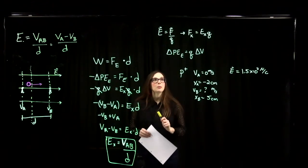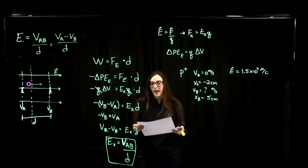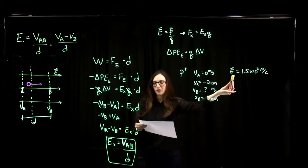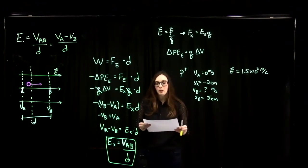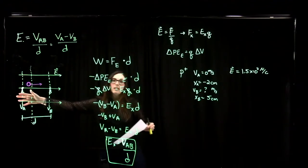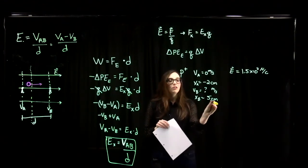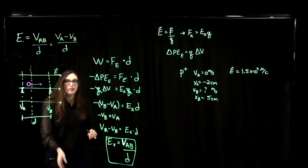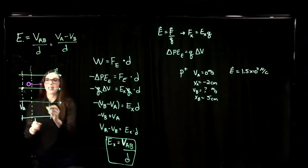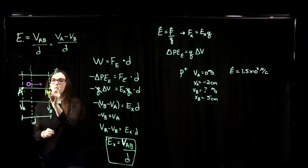We have a proton — labeled p-plus — released from rest, so initial velocity is 0 m/s, at a position x = −2 centimeters, in a constant electric field with magnitude 1.5 × 10³ Newton per coulomb pointing in the positive x direction. I already have my diagram here: the electric field points in the positive x direction. We want to find the speed of the proton at a position of 5 centimeters.